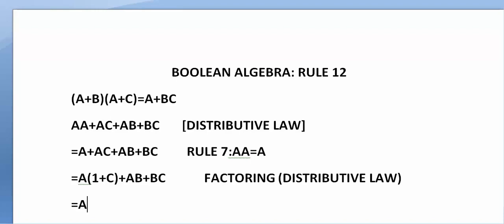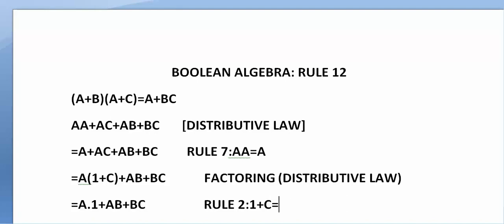According to Rule 2, if you OR any variable with 1 it will always be equal to 1. So 1 or C is going to be equal to 1. That means we have A·1, and the other terms A·B and B·C remain the same. Here we have applied Rule 2 of Boolean algebra, wherein 1 or C = 1.